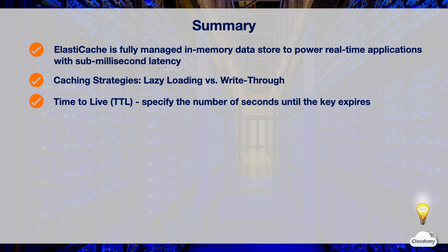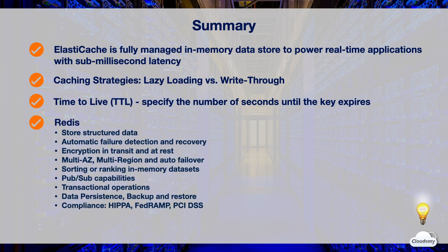ElastiCache offers two in-memory data stores: Redis and Memcached. Redis is the in-memory cache designed to store complex structured data. You can use Redis as simple caching for session data, as well as complex data for data analytics, machine learning, and real-time messaging applications.